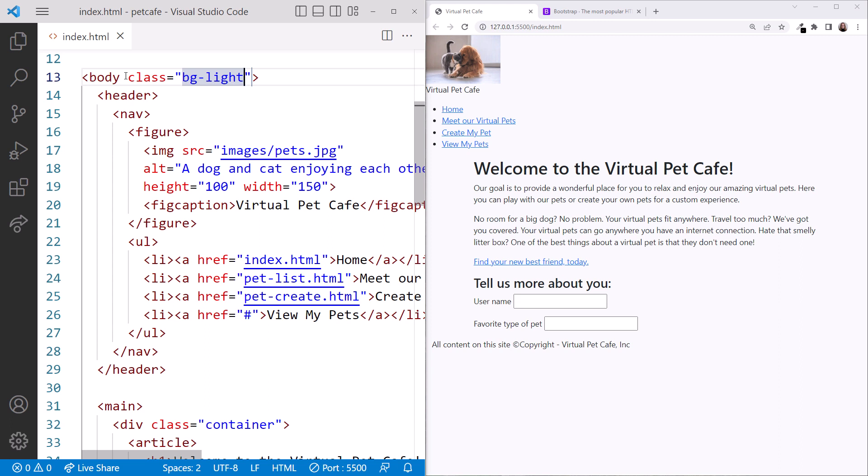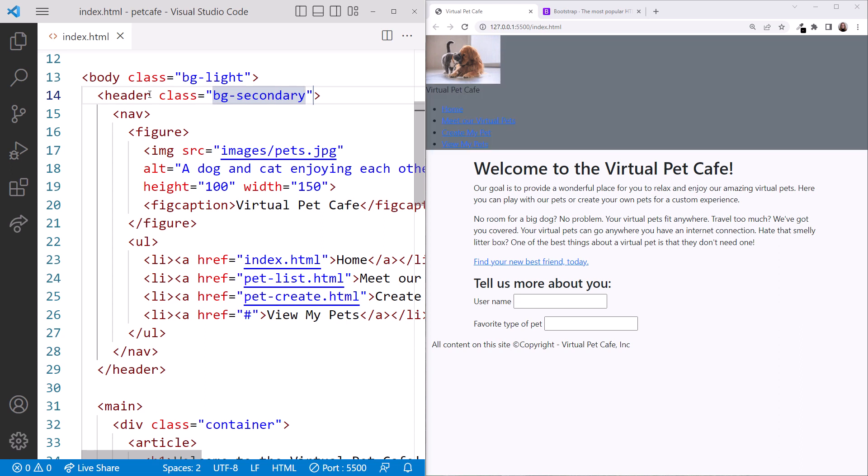Let's give our header section a darker background color for contrast. On the header element, let's add the class attribute and set it to BGSecondary. That sets the background to a darker gray color. Nice!